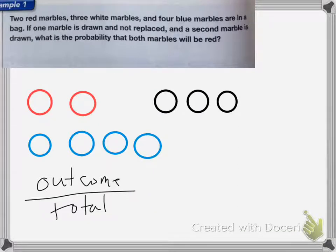A dependent event is a probability that is influenced by a prior event. So in this case, I'll be pulling marbles from a bag, and I have 2 red marbles, 3 white marbles, 4 blue marbles.